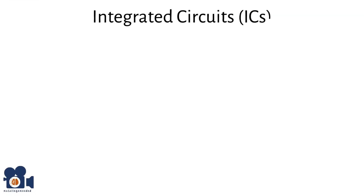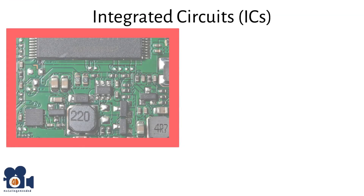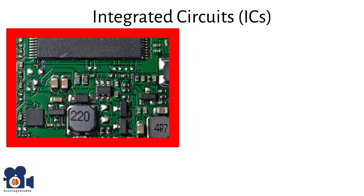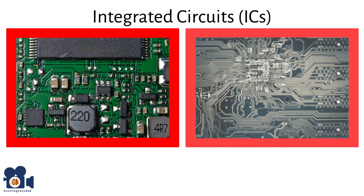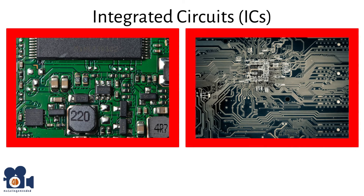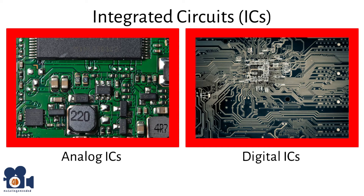Integrated circuits (ICs) are miniaturized electronic circuits that integrate multiple semiconductor devices — such as transistors, diodes, capacitors, and resistors — on a single chip. They perform various functions from simple logic operations to complex processing tasks. Analog ICs are used for signal processing tasks such as amplification in audio equipment. Digital ICs are used in computers and other digital systems for processing and storing data; for example, microprocessors and memory chips perform calculations, execute programs, and store data.